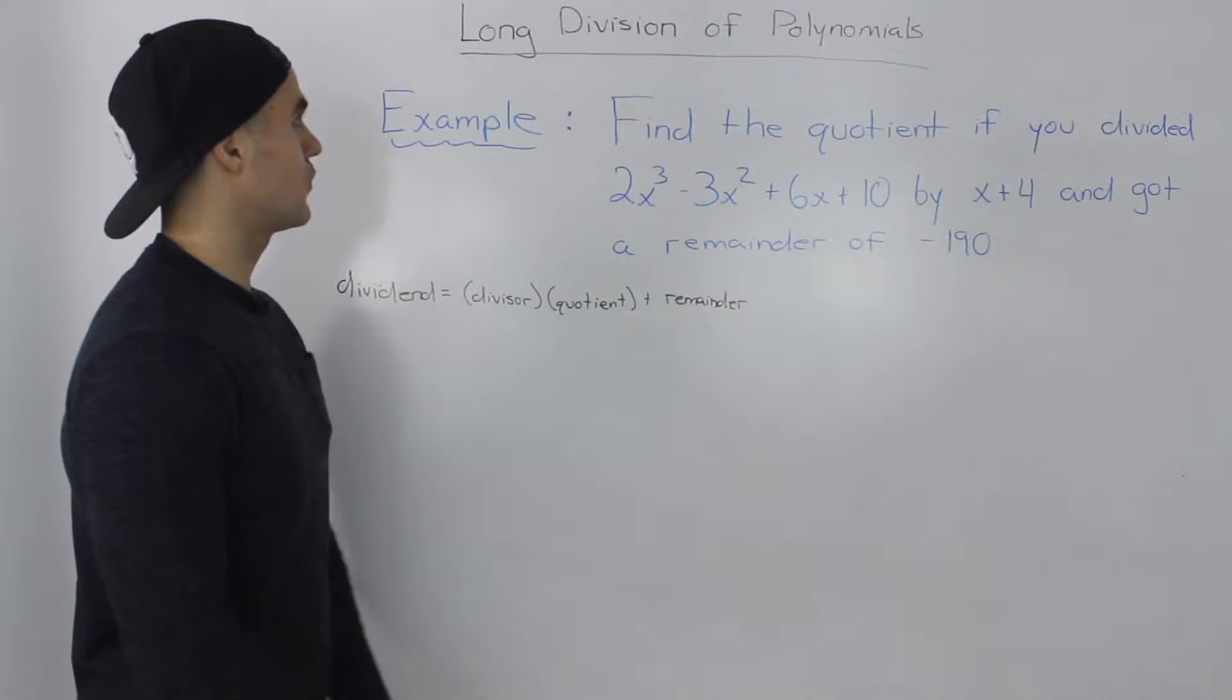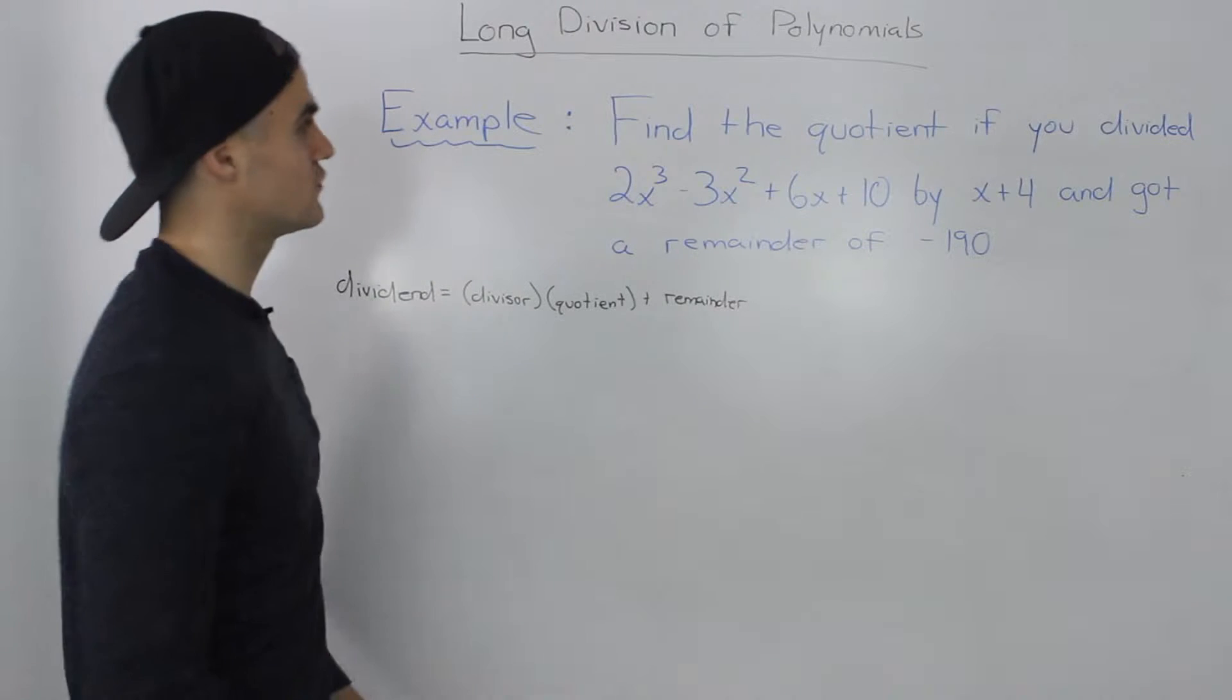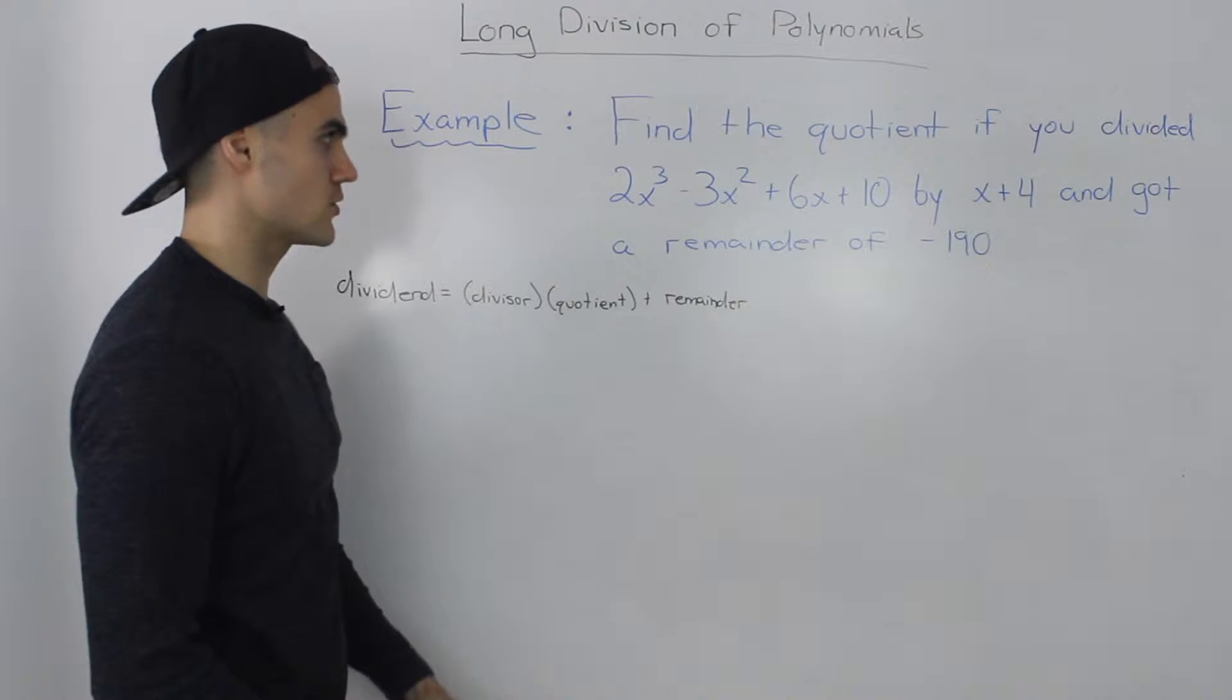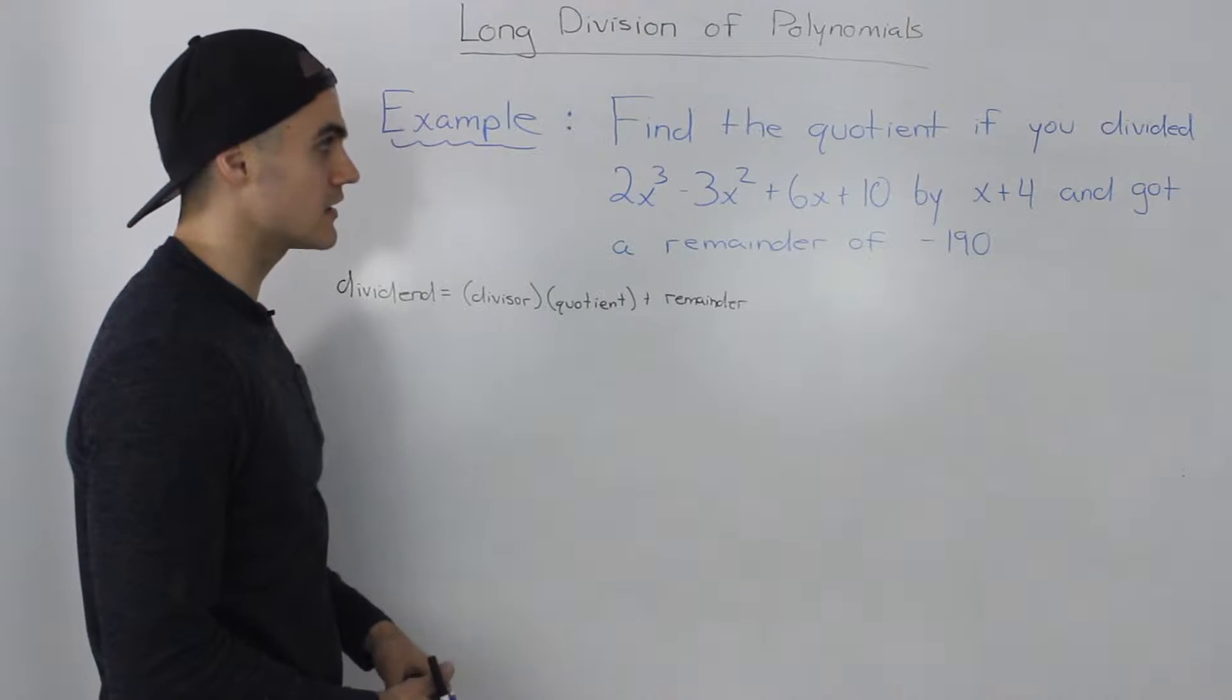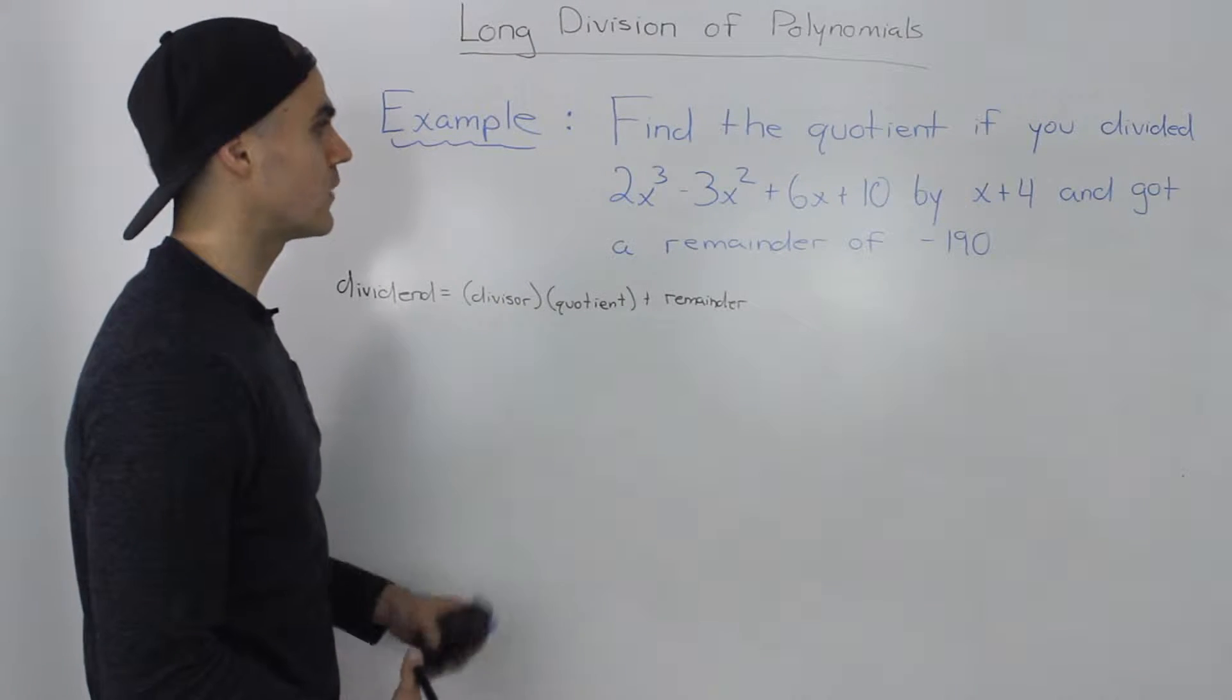Moving on to the next example for the long division of polynomials, find the quotient if you divided 2x cubed minus 3x squared plus 6x plus 10 by x plus 4 and got a remainder of negative 190.